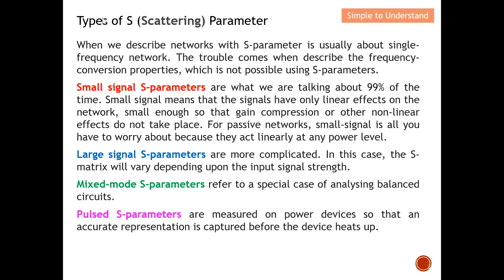When we describe a network with S-parameters, it is usually for a single frequency. A set of S-parameter matrices is only valid at that particular frequency — for example, measured at 1 GHz, it is only valid at 1 GHz. The trouble comes when describing frequency conversion properties, which is not possible using standard S-parameters, since changing frequency requires a new set of measurements.